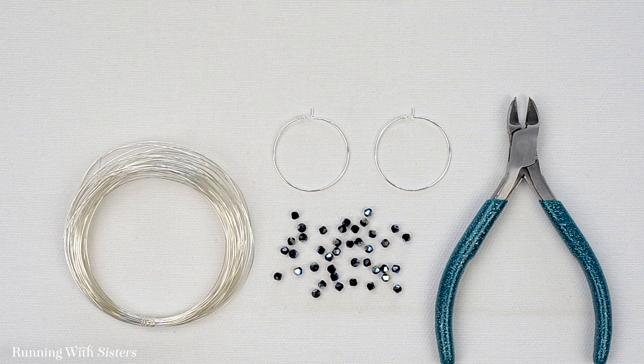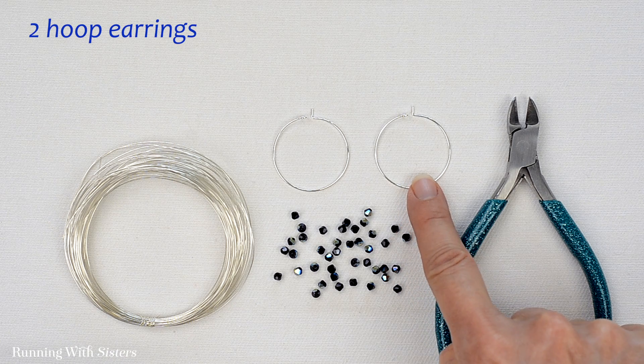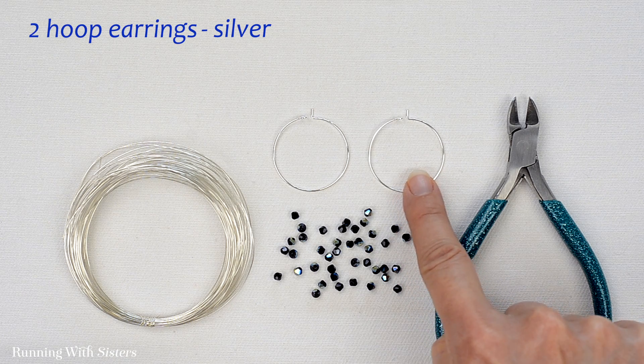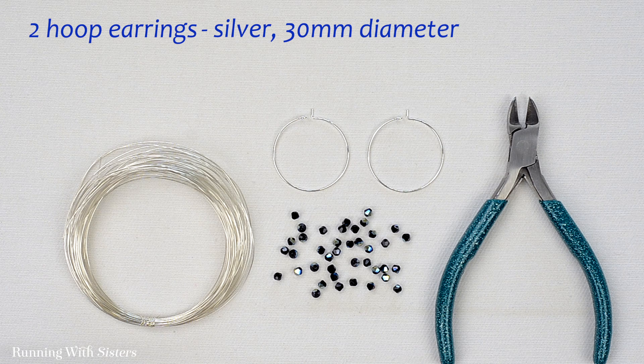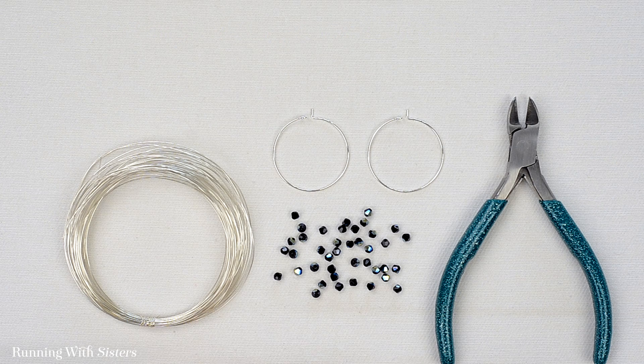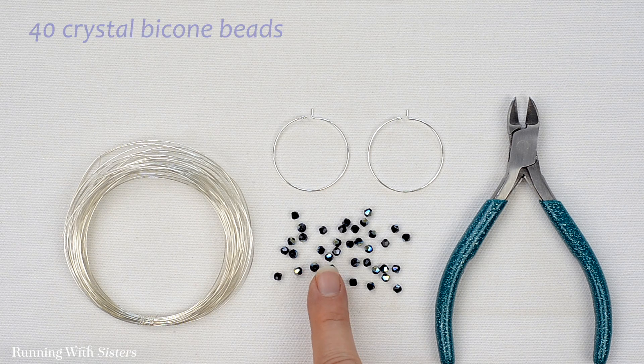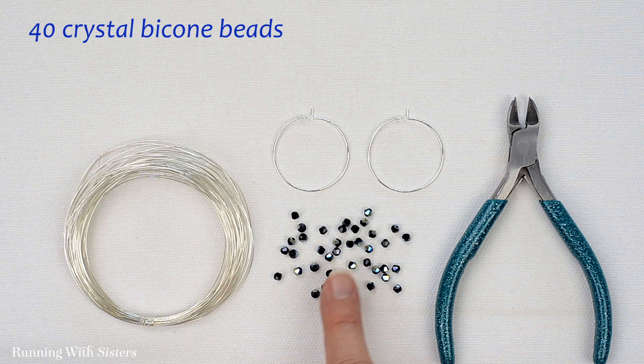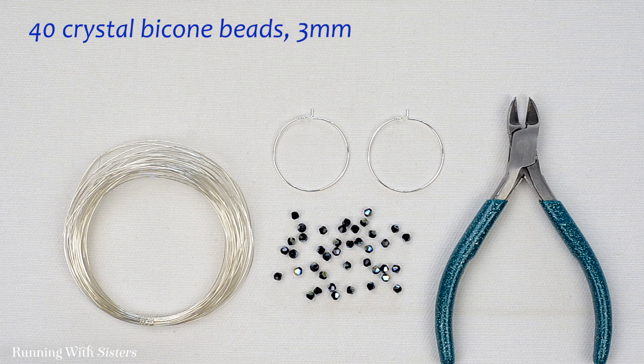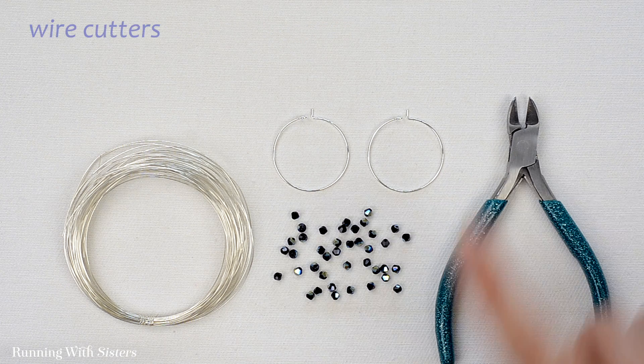To make the crystal wrapped earrings, you need two wire hoop earrings. Ours are silver and they're 30 millimeters in diameter. You'll also need 26 gauge wire in silver. For beads, you need 40 crystal bicone beads, these are three millimeters. And for tools, all you need are wire cutters.